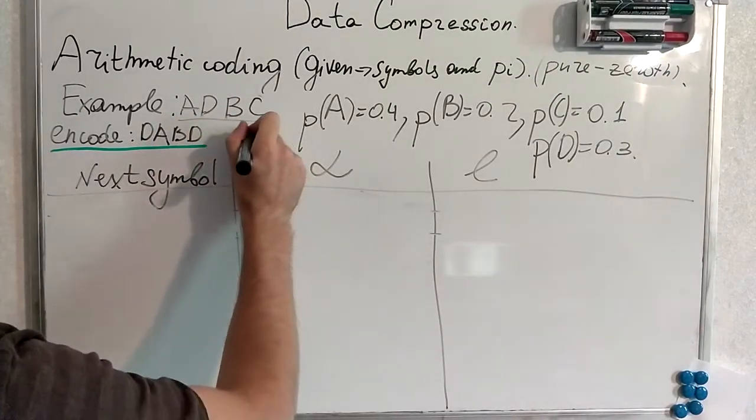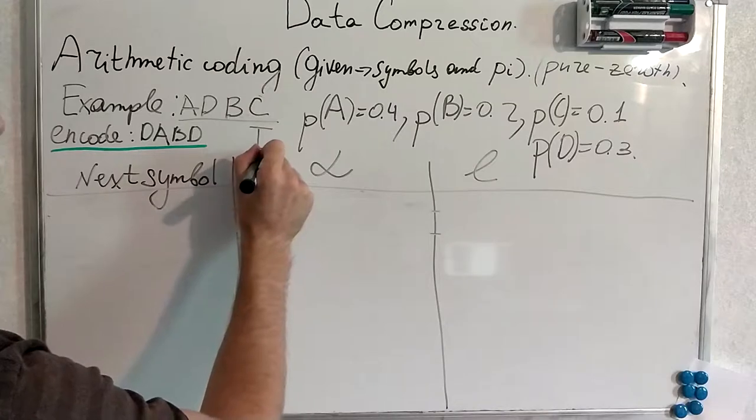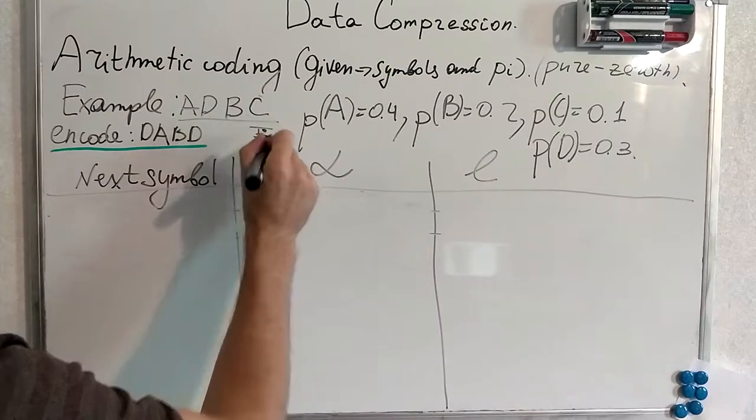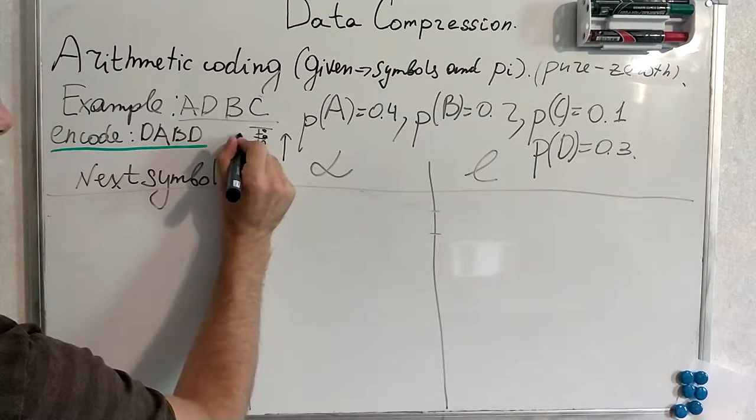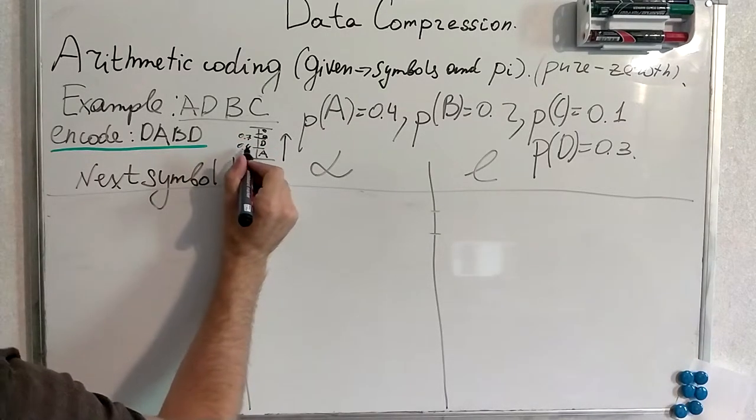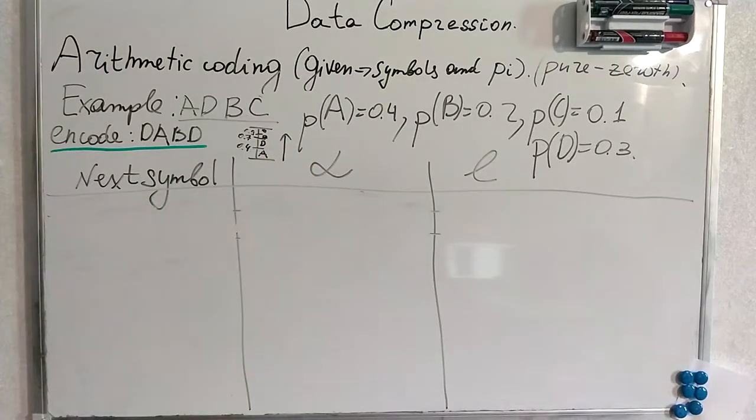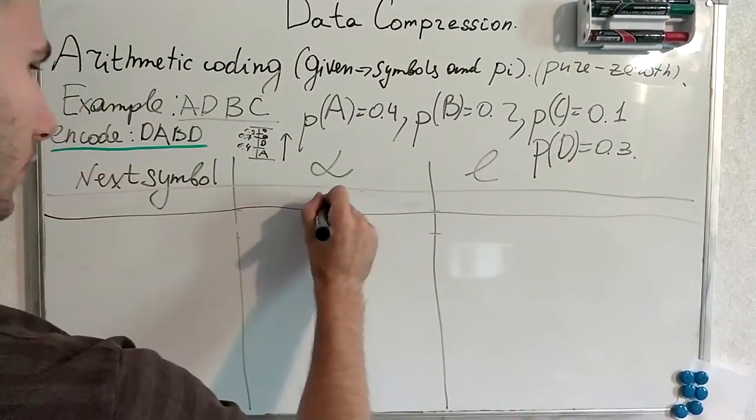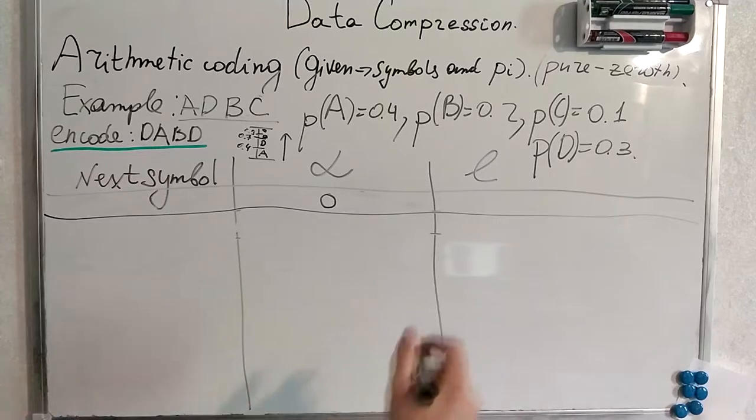To make it simpler I'll give a small sketch. Up to here is interval for A, for D and very small for B and C. Here's 0.7 because 0.4 plus 0.3 is 0.7. Here's 0.9. And very small for C because C is 0.1. So we start from the interval whose lower bound is 0 and the length of the interval is 1.